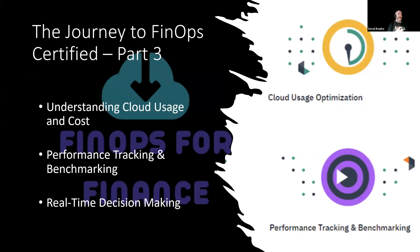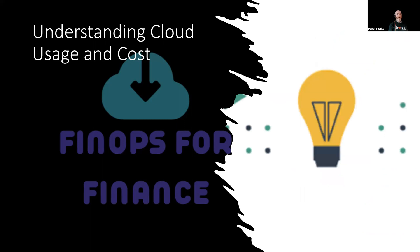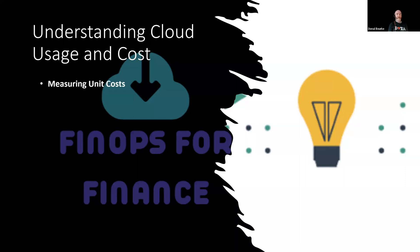I'm going to cover three additional ones today: understanding cloud usage and cost, performance tracking and benchmarking, and real-time decision-making. So first off, we have understanding cloud usage and cost. At its highest level, it does exactly what it says on the tin. We get this big cloud bill that's hundreds of thousands of lines long — we need to understand what we're actually using and how much it's costing us. The FinOps Foundation has broken down a number of capabilities for understanding our cloud usage and cost.